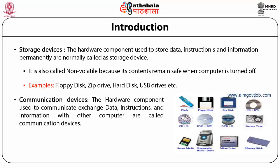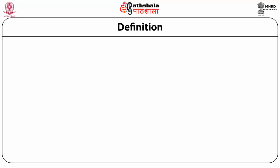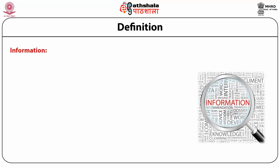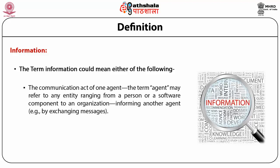Communication devices are the hardware components used to exchange data, instructions and information with other computers. Information can be seen from three perspectives: it could be data objects that represent knowledge or belief; it could be the knowledge or belief of an agent as part of their mental status; or it could be a communication act of one agent referring to any entity ranging from a person, a software component, or an organization forming another agent.